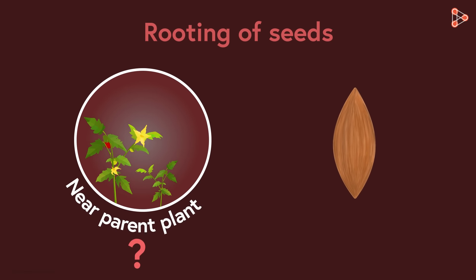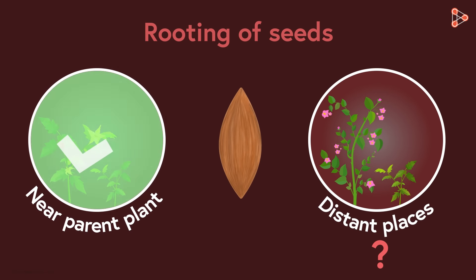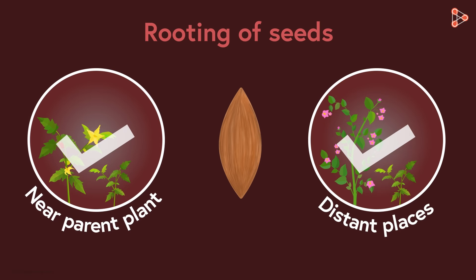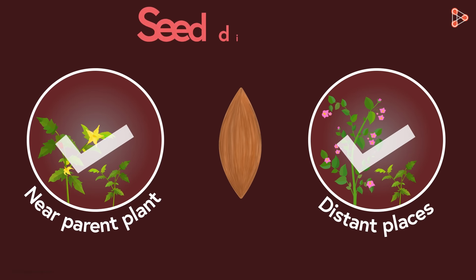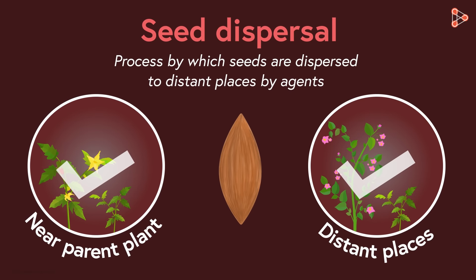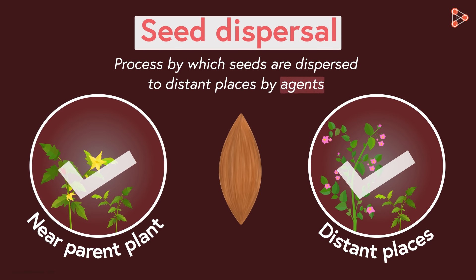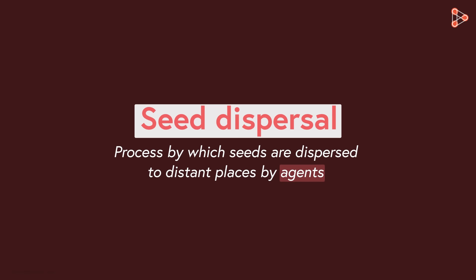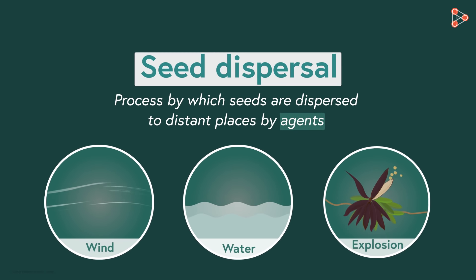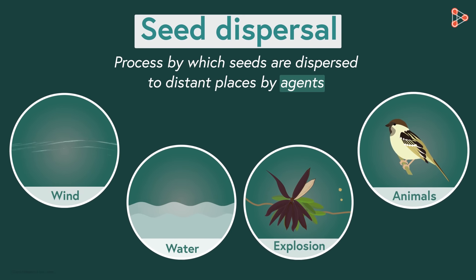Do they always get rooted near the parent plant from where they arise, or sometimes at distances as well? Seeds can be dispersed to nearby or distant places, all thanks to the process of seed dispersal. The process by which seeds are dispersed to distant places by various agents is known as dispersal of seeds. Seeds are transferred to various places by factors such as wind, water, explosion, and animals. These agents make the process of dispersal of seeds easier.